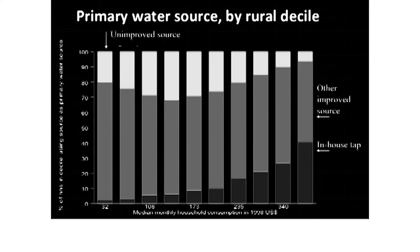This next slide shows the same data for rural areas. As income goes up, more and more households have piped water connections. In rural areas, the most prevalent water source is an improved source, but in contrast to urban areas, many more rural households are actually using unimproved sources. So this picture looks quite different from the urban coverage by income we looked at previously.